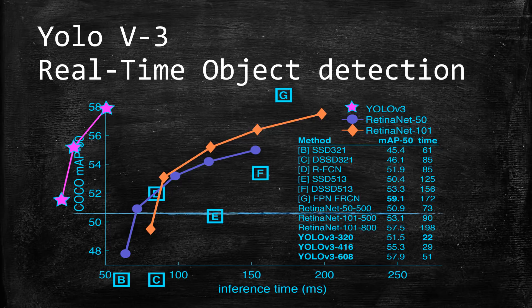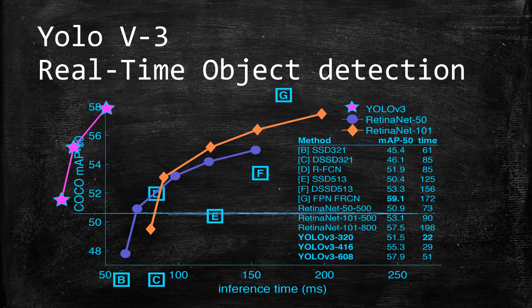Here's a graph representing the speed of YOLO version 3 — it's a really fast network, one of the fastest out there, compared to different real-time object detection networks such as RetinaNet and SSDs. On the x-axis you can see the inference time, and YOLO version 3 is the fastest. That doesn't necessarily mean it's the best — there's no single best network for every case. Depending on whether accuracy or inference time matters most to you, you'll need to use a different network. But it is the fastest and one of the most well-known networks.